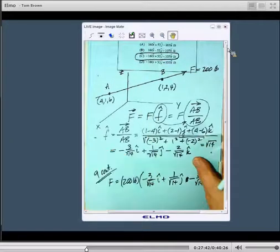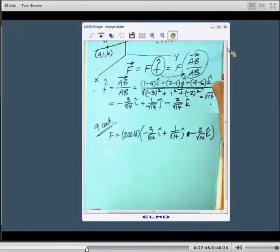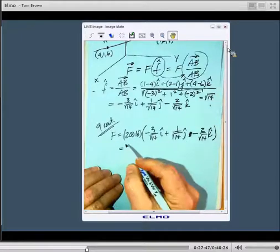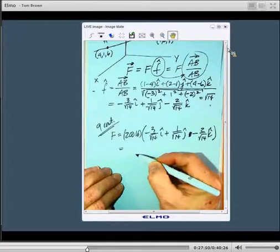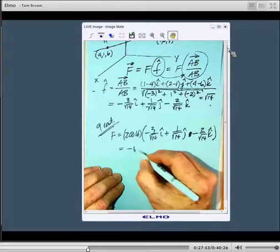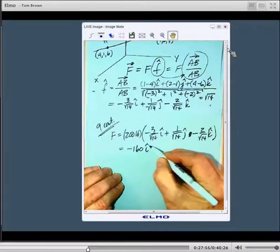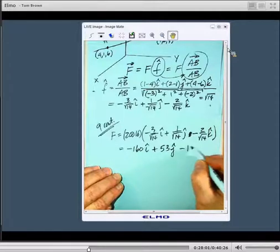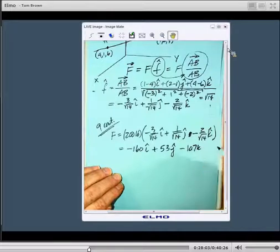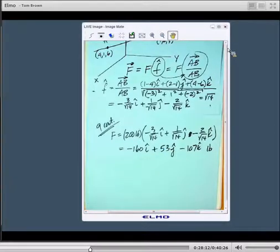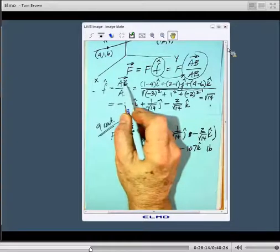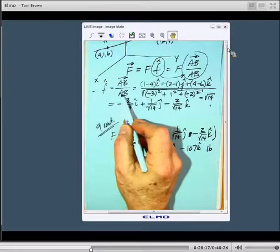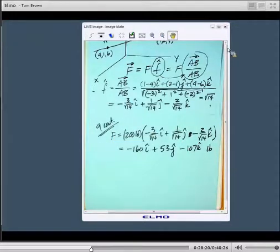Let's go on and multiply that out. We multiply this out, we will get to whole numbers, we'll get minus 160i plus 53j minus 107k, and that'll all be in pounds. The unit vector doesn't have any units, because what you're doing is AB is in feet, AB is in feet, so they cancel, and so the unit vector doesn't have any dimensions.